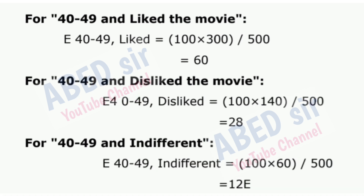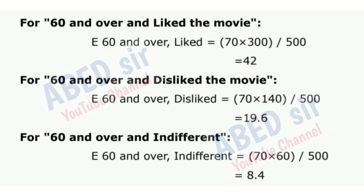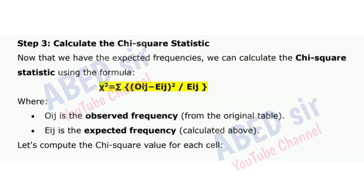For 40 to 49 and liked the movie: E = 60. For 40 to 49 and disliked the movie: E = 28. For 40 to 49 and indifferent: E = 12. For 60 and over and liked the movie: E = 42. For 60 and over and disliked the movie: E = 19.6. For 60 and over and indifferent: E = 8.4. Step 3: Calculate the chi-square statistic. Now that we have the expected frequencies, we can calculate the chi-square statistic using the formula, where O is the observed frequency and E is the expected frequency calculated above.